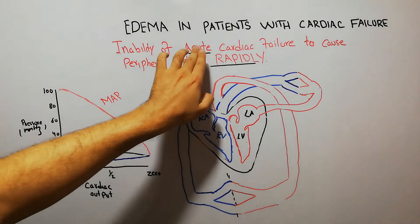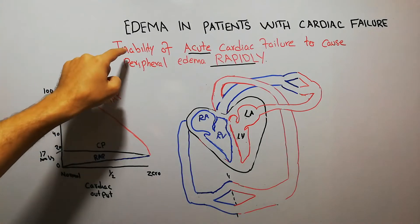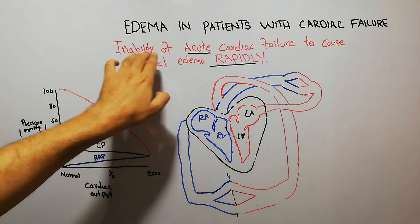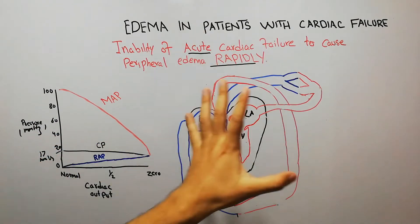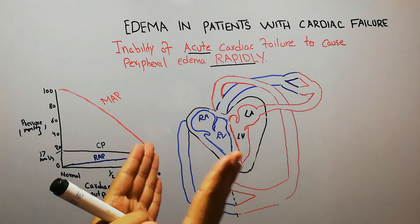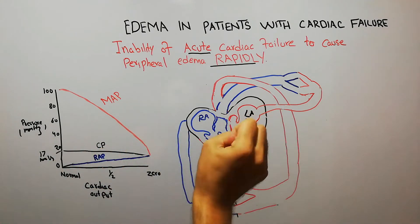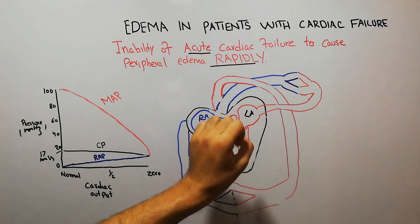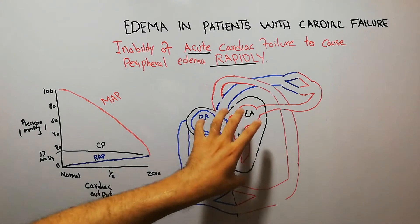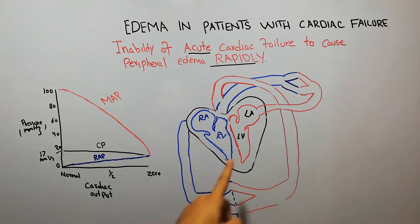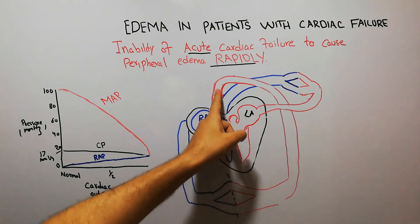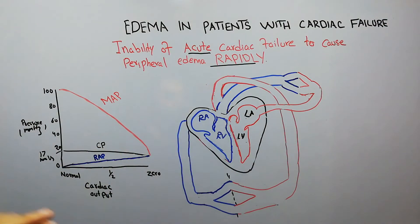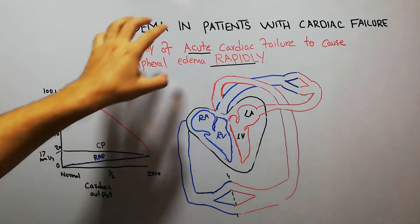Now, when acute cardiac failure occurs — the inability of acute cardiac failure to cause peripheral edema rapidly — why can edema not occur rapidly? When cardiac failure occurs acutely, the heart is normally pumping and suddenly a problem occurs due to which pumping stops and the heart cannot pump blood normally. The blood in the left ventricle cannot be pumped into the aorta, and so the mean aortic pressure starts falling down.